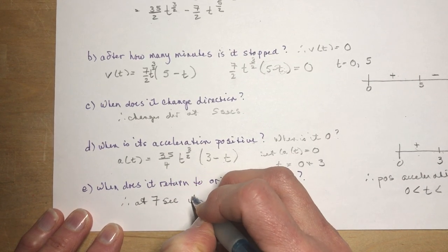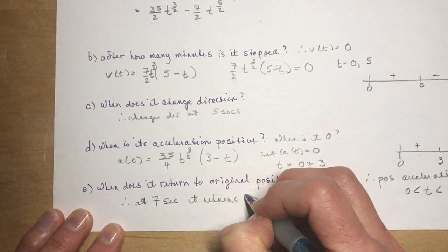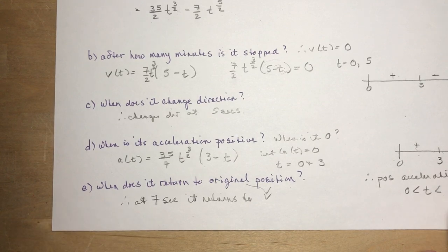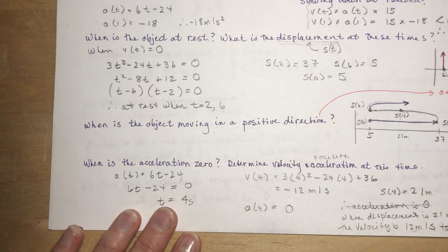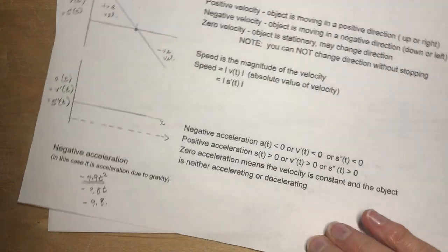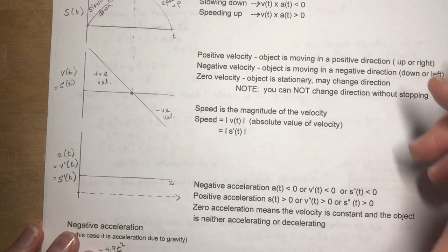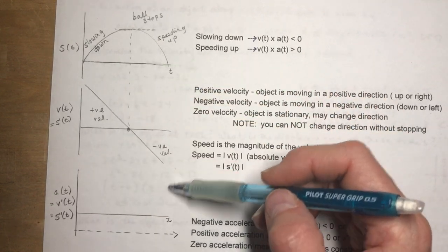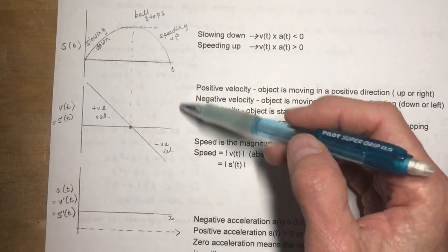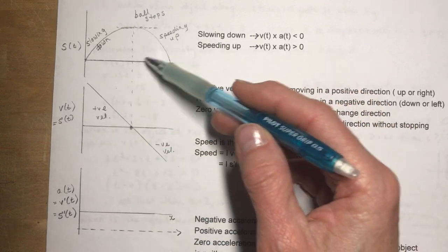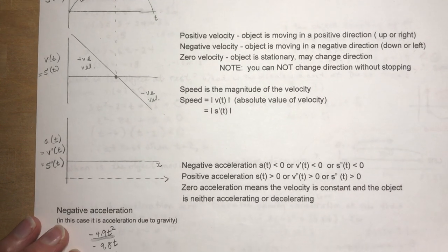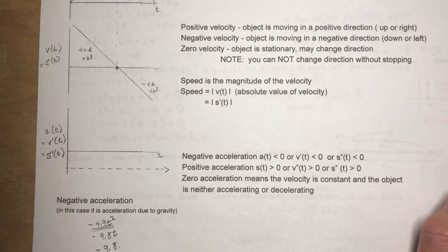At 7 seconds it returns to its original position. That's the end of section 3.1. The most important part of this lesson is understanding the graph of a ball going up and coming back down — it really helps you visualize speeding up and slowing down. You can always sketch something like this on a unit test. Up next is 3.2 — stick around and hope you've subscribed by now.